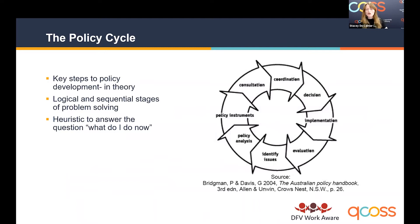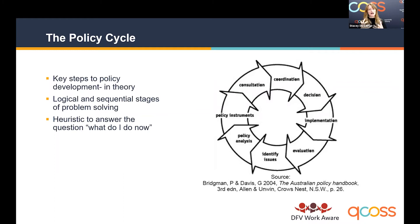This is a policy cycle used across public service, covering the key steps to policy development in theory. One thing to make clear is that for those not heavily involved in policymaking, it might seem quite rigid and structured. But policymaking is actually quite messy — it might not follow this cycle to the letter. There will be jumping around, consultation, and going back and reworking things. It's not as logical as the cycle makes it out to be.